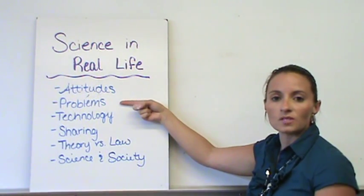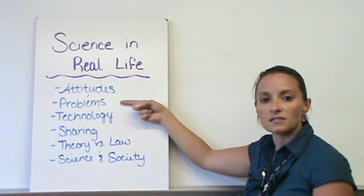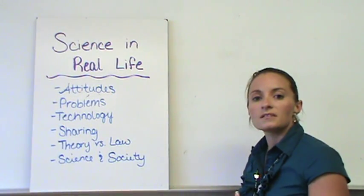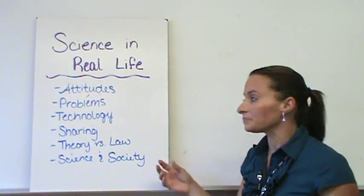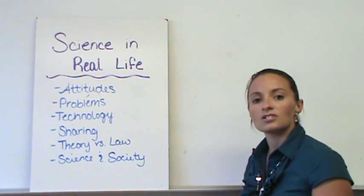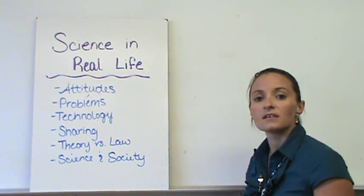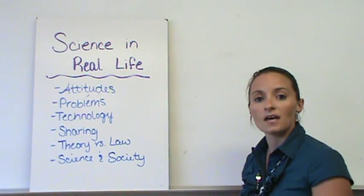The second piece is the problems. What are some problems that scientists deal with on a daily basis that deal with us in everyday life? Technology. Technology has been a big help with science, advancements in science, and how has that been helpful?